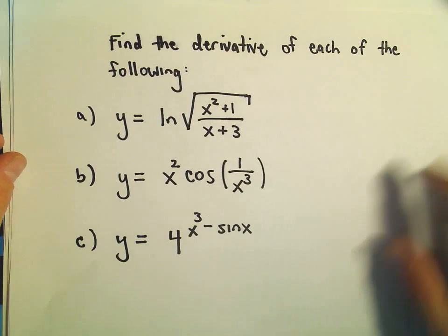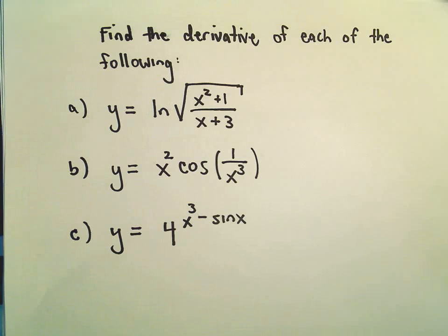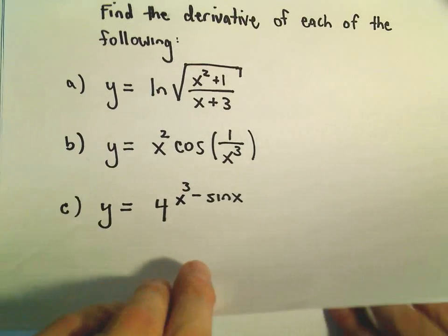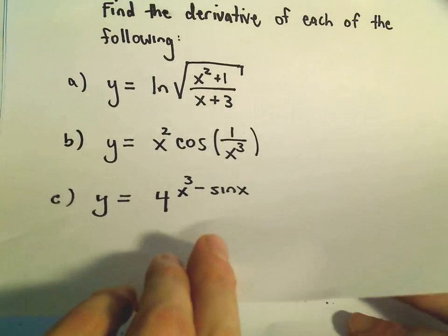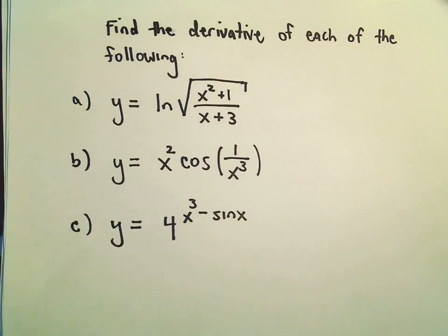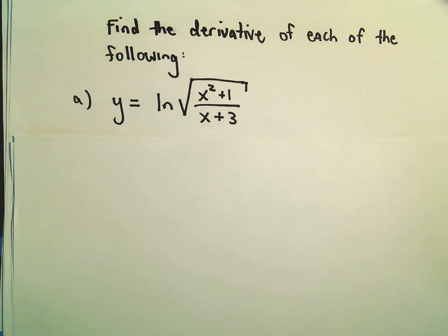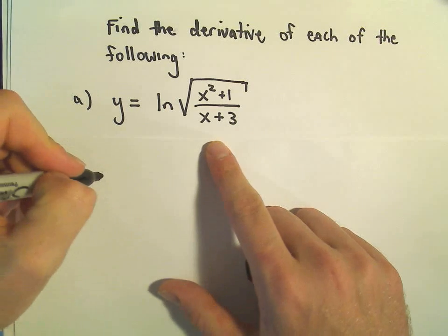So we've got a few different derivatives here. The first thing I'm going to do is this natural logarithm of the square root of x squared plus 1 over x plus 3. The first thing I'm going to do with this is rewrite this using properties of logarithms. It's going to make taking the derivative much easier.